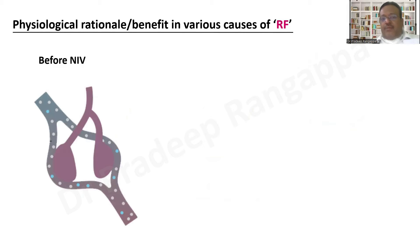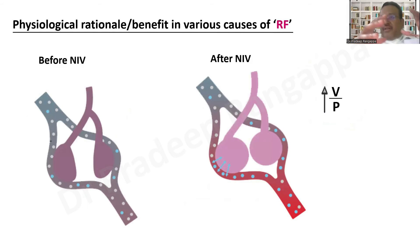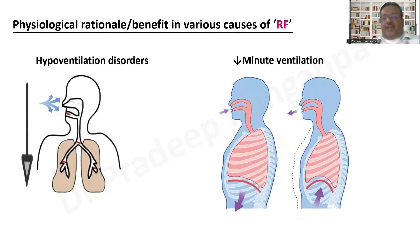A diagrammatic representation shows how alveoli and perfusion appear before NIV, and then how alveoli open up and perfusion matching improves after NIV, with improvement in the ventilation-perfusion ratio. Overall, physiologically and from a clinical standpoint, NIV holds promise in circumventing elastance, resistive, and threshold pressures, mitigating shunt fraction, optimizing V/Q matching, aiding diffusion, and supporting respiratory muscle weakness.